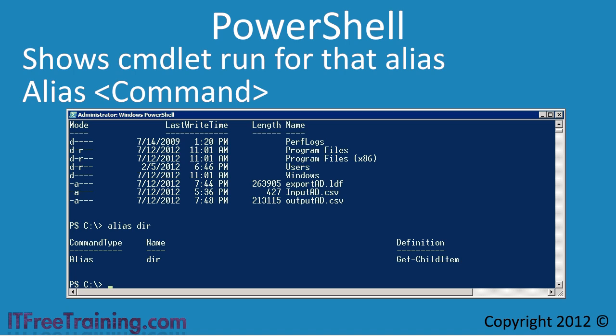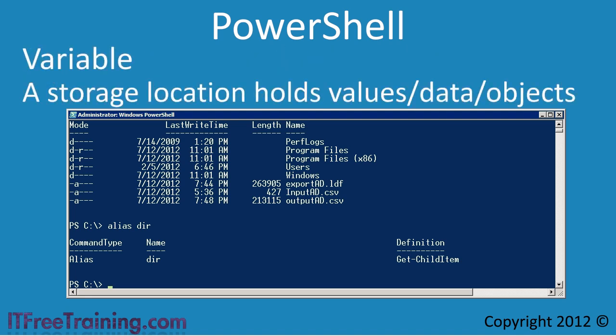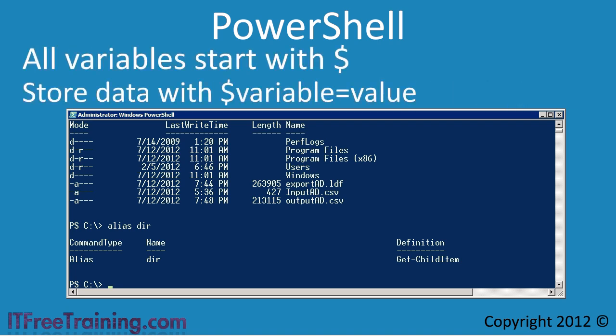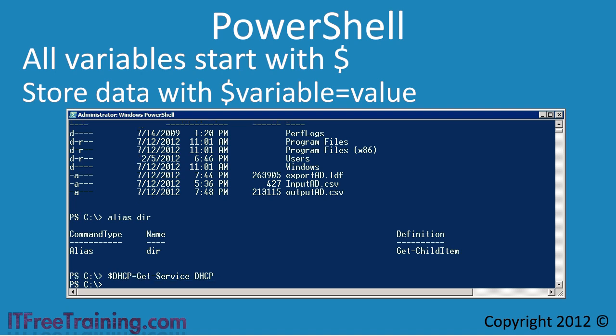The next point I want to look at is how variables work in PowerShell. A variable is a storage location which contains information like values. In PowerShell, a variable can also contain an object. All variables start with a dollar sign. For example, I could create a variable called $dhcp. I will call the cmdlet Get-Service, which retrieves the object for a service. What has occurred is that the Get-Service cmdlet has retrieved the object for the DHCP service, so the variable $dhcp now contains the object for the DHCP service.